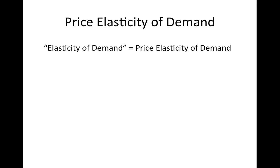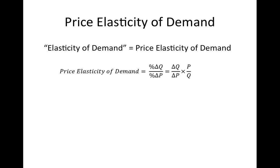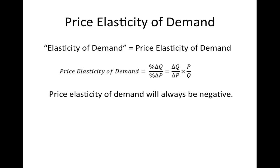We will start off with the price elasticity of demand. Note that you will often hear economists talking about the elasticity of demand — that term always refers to the price elasticity of demand. If we are talking about some other kind of elasticity, we will always put another word in front of the word elasticity. The price elasticity of demand measures how responsive quantity demanded is to changes in price. The formula is the percentage change in quantity demanded divided by the percentage change in price. Note that the price elasticity of demand will always be negative. Because we should always get a negative value, we usually use the absolute value of the number when thinking about what it means.